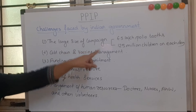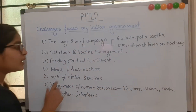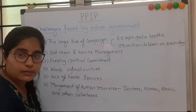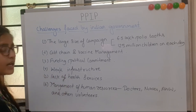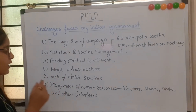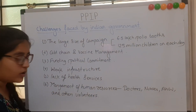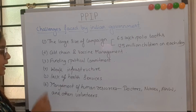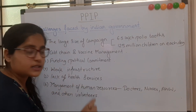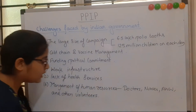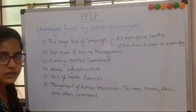The biggest challenges under this program were: the large scale of the campaign — 6.5 lakh polio booths and vaccination of 125 million children on each immunization day; cold chain and vaccine management; funding and political commitment; weak infrastructure and lack of health services; and management of human resources like doctors, nurses, anganwadi workers, and other volunteers.